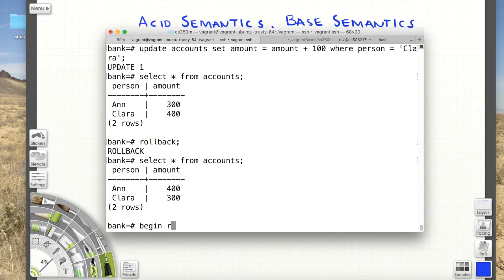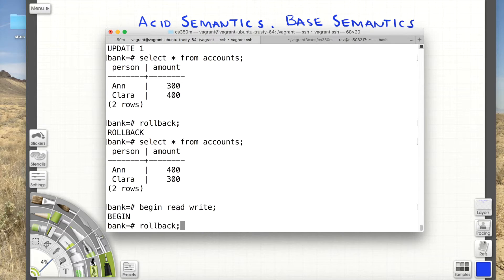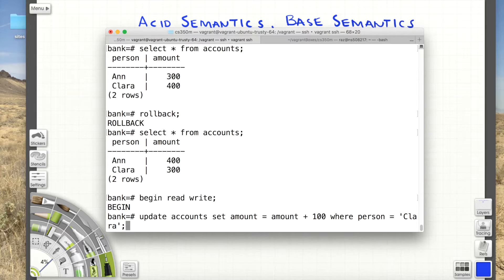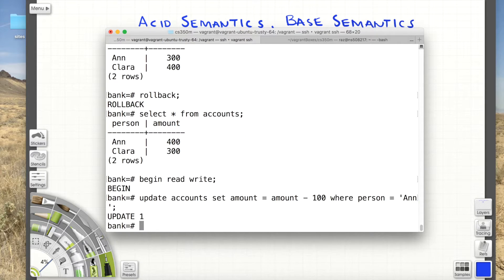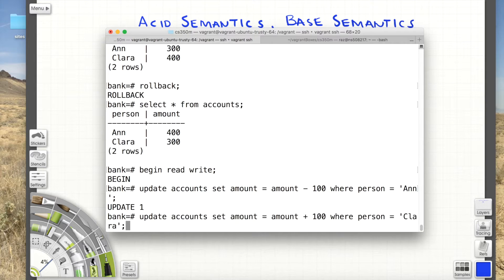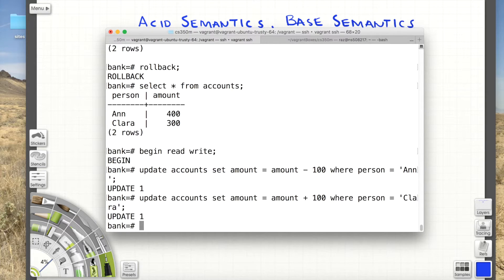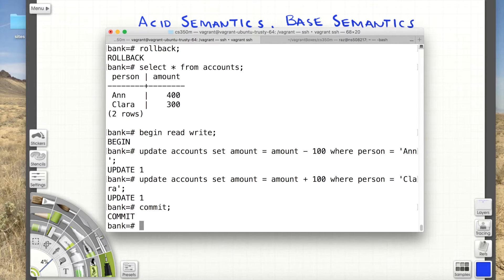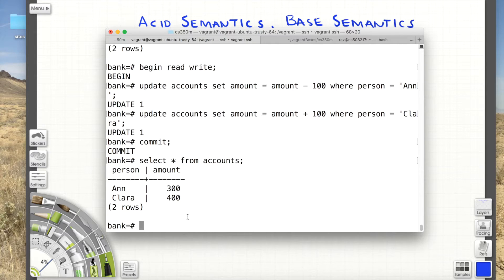So when you see rollback or commit in your code, you know that that's what this function is doing. So let's do that again. Let's take 100 bucks from Ann. I'm going to give it to Clara. Now I am going to commit. And you see that that transaction this time actually occurred.